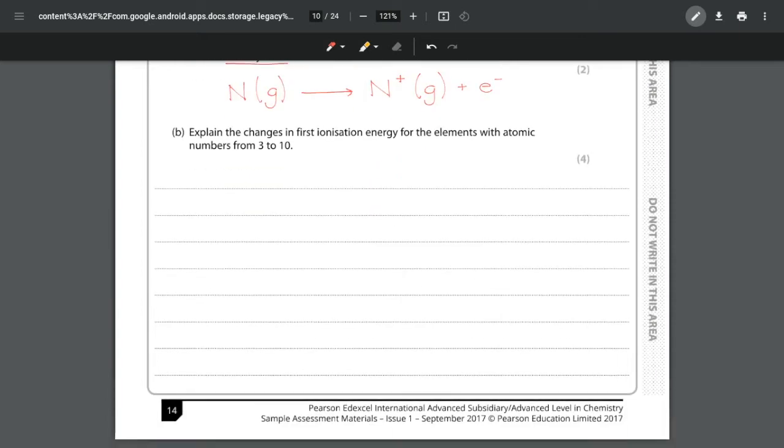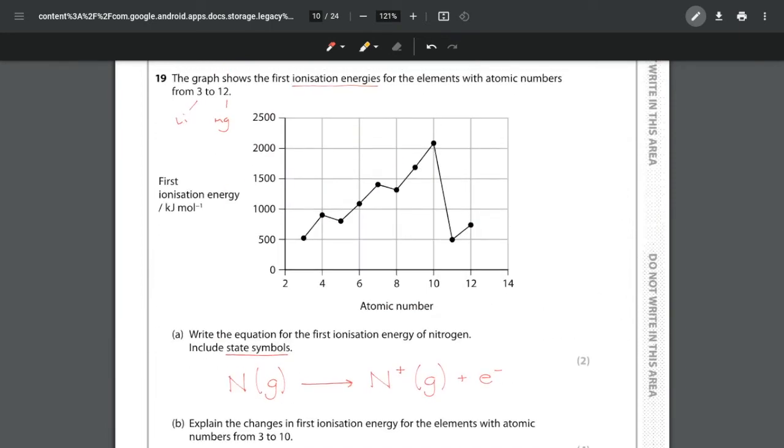For part B we have a four mark question here and we want to explain the changes in the first ionization energy for the elements with atomic numbers 3 to 10. In general going from 3 up to 10 we are seeing an increase in our ionization energy. But you can see that we've got two anomalies here between beryllium and boron, and between nitrogen and oxygen. And we need to explain each of these.